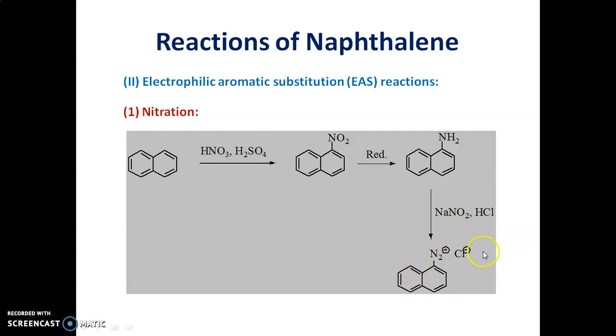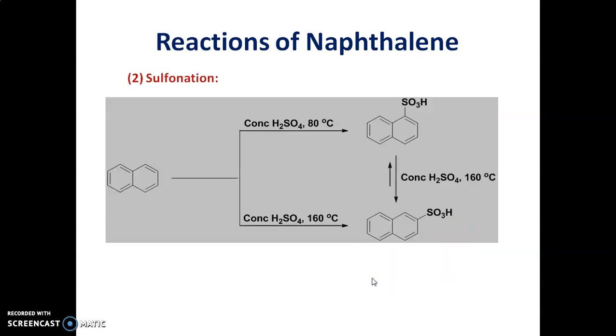to give a diazonium salt which is called as naphthalene diazonium chloride. The next reaction is sulfonation reaction. Naphthalene on sulfonation with concentrated sulfuric acid at 80 degree Celsius gives 1-naphthalene sulfonic acid. Whereas, if you treat naphthalene at 160 degree Celsius, we get 2-naphthalene sulfonic acid as the product.